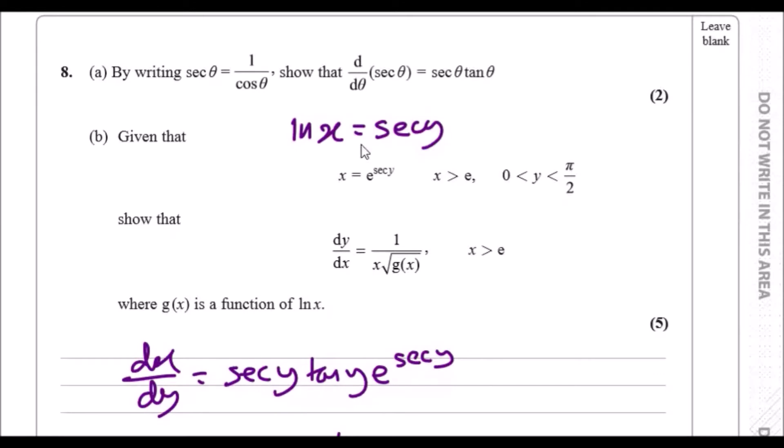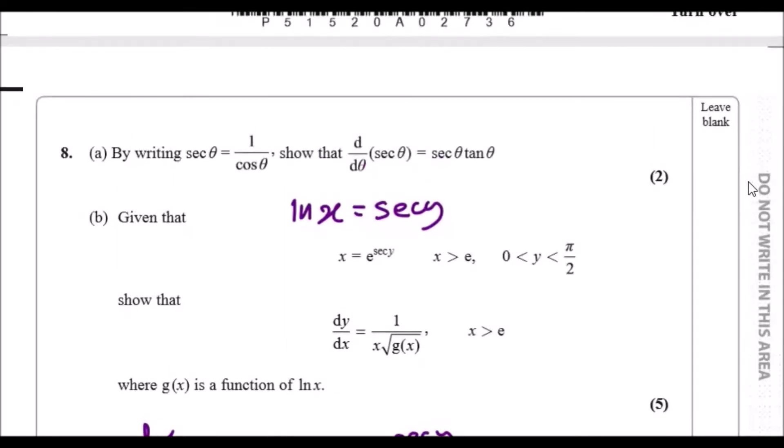But what about tan y? As for tan y, this is something we have to spot. Remember the trig identity: sin² y plus cos² y equals 1. You can make one in terms of sec and tan by dividing by cos². This becomes tan² y plus 1 equals sec² y, and since we know sec² is ln x all squared.